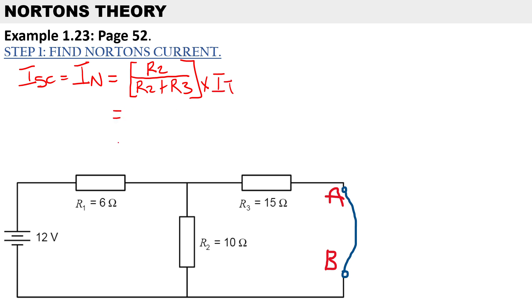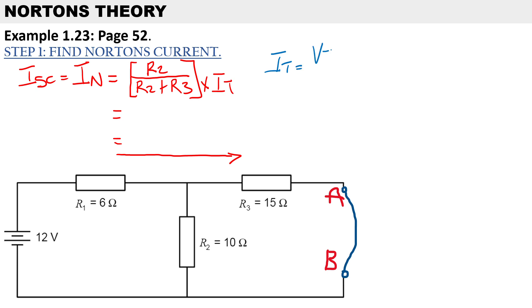In order to calculate Norton's current, we first need to determine the total current, and here we use Ohm's law. To calculate the total current I_total, it's going to be V_total over R_total.